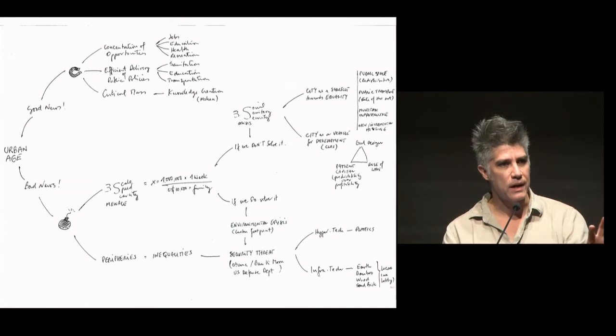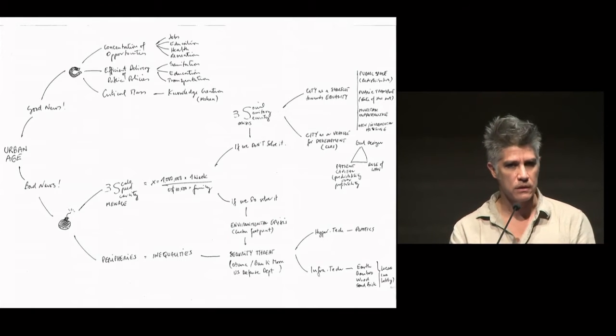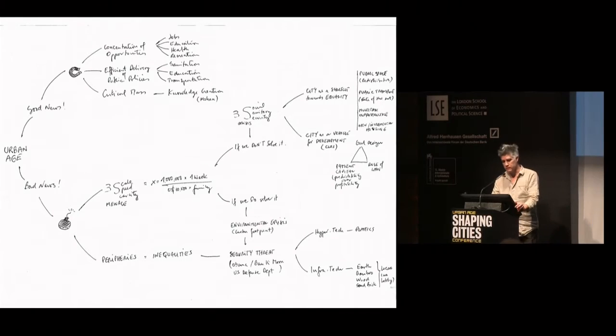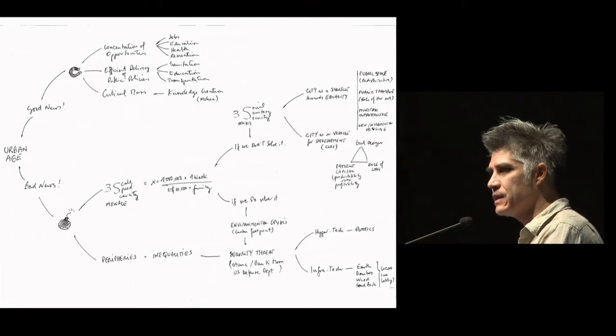So the critical mass of cities is going to be crucial in knowledge creation, which will be leading development and economic growth. So that's why, even if counterintuitive, the more people coming to cities, the better. The problem is that, I would say, until not long ago, maybe a couple of months, we thought that the downside of this, the bomb part, is that there was a threat, mainly from what we call the 3S menace: the scale, speed, and scarcity of means.